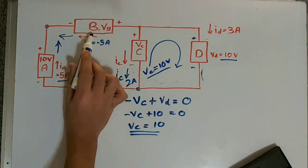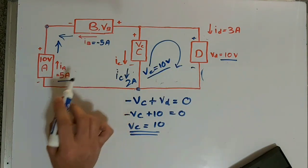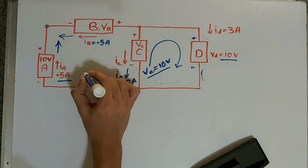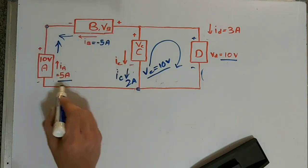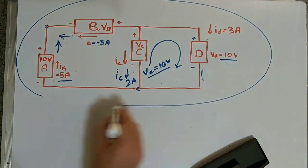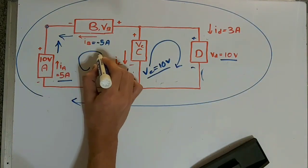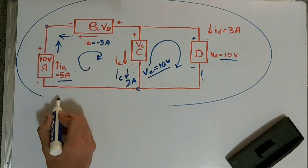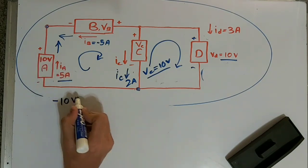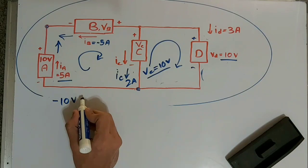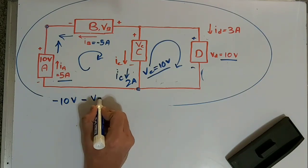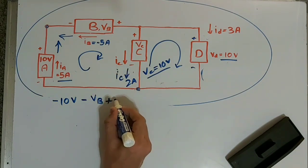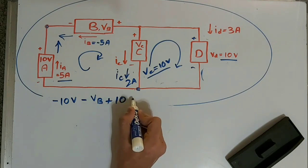Now we need to find VB. There are two loops that can give us VB. Let's do the small loop first, going clockwise. Minus and plus, so minus 10 volts. Again going from negative to positive, so minus VB. Then going from positive to negative, plus VC which is 10 volts, equal to zero.